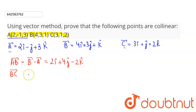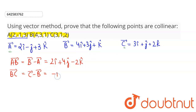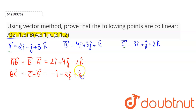Now the BC vector can be written as position vector of C minus position vector of B. This equals: 3i-cap minus 4i-cap gives minus i-cap; j-cap minus 3j-cap gives minus 2j-cap; and 2k-cap minus k-cap gives plus k-cap.